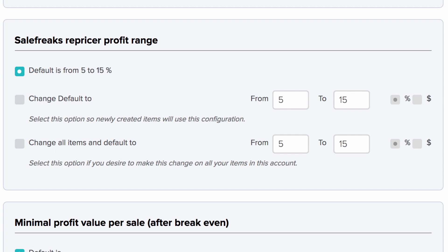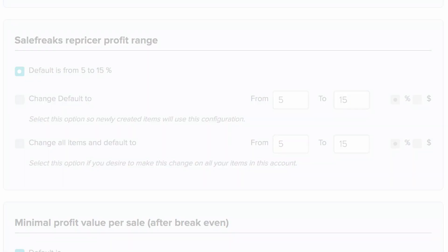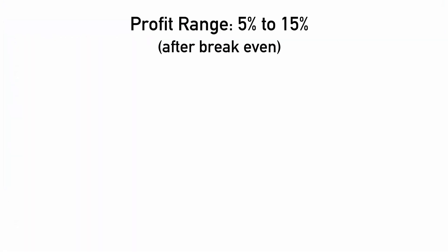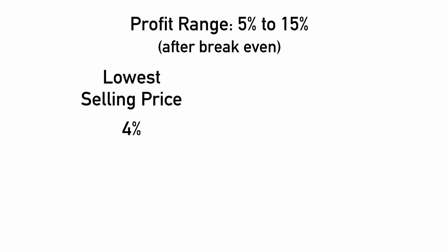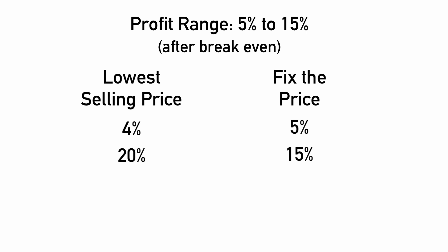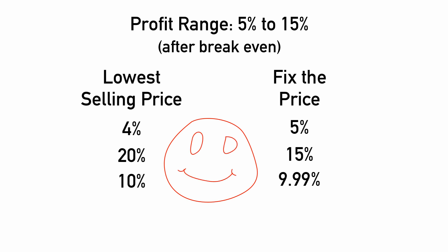Once we discover all the items from competition that match your listings, we will look at the profit range and set the price. If your profit range is between 5% and 15%, and the software finds the lowest selling price is at 4%, it will fix the price at 5%. If the lowest price is at 20%, it will apply the higher markup of 15%. But the best case is when the lowest price falls within the variable — say 10% — then the system will set the price at 9.99%, undercutting your competition and making your listing the lowest selling price.